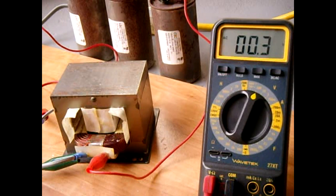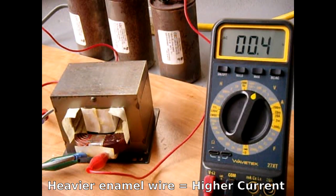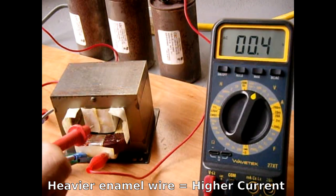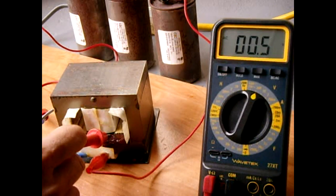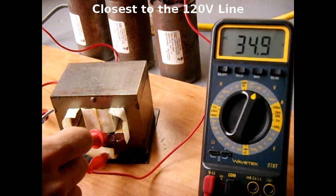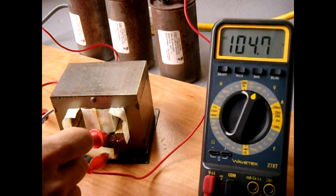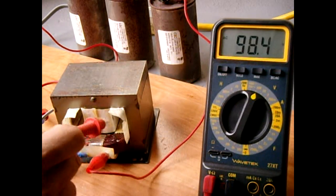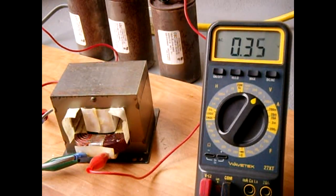The good thing about these variacs or auto transformers is the current output is excellent on them. Now I'm going to check another point which is very far back in the winding, and let's see what we get. 104, 105 volts.